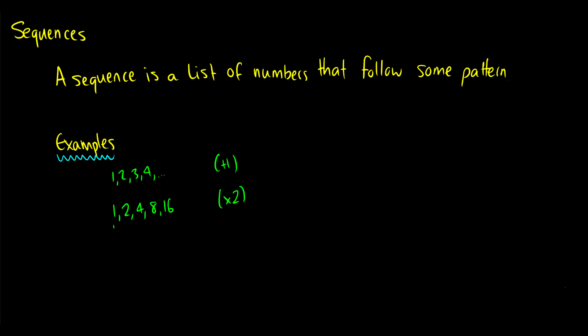So 1 times 2 is 2, 2 times 2 is 4, 4 times 2 is 8. You can also have something more complicated, like 1, then 1 half, then 1 fourth, 1 eighth, where in each case you are dividing by 2. So 1 divided by 2 is a half, 1 half divided by 2 is a fourth, and you can keep going until you get to 0. The dots at the end just mean the sequence continues on to some infinite term — the sequence will never stop.